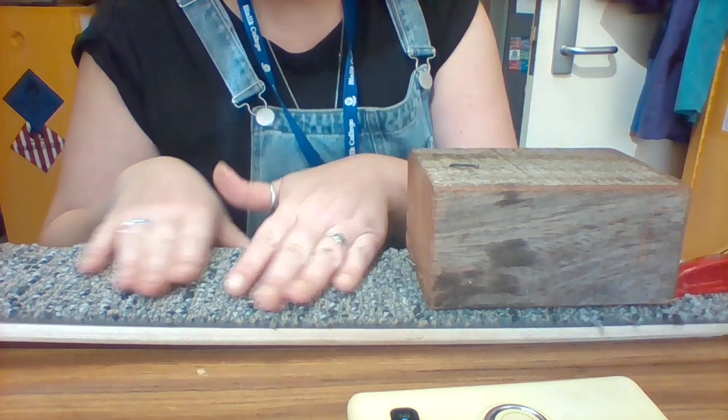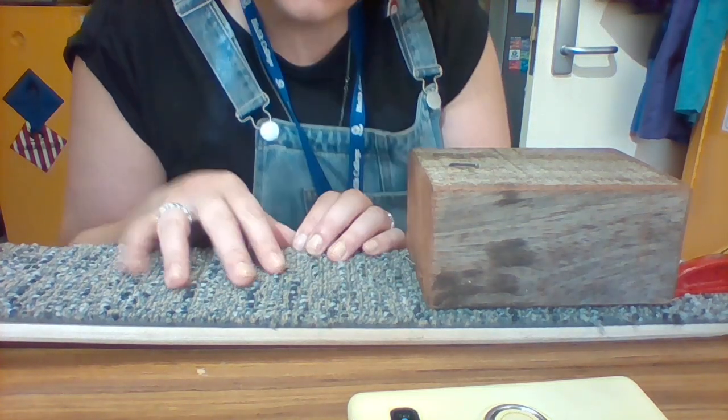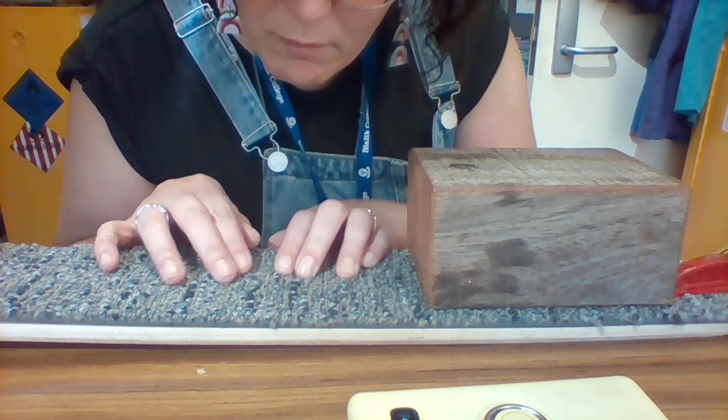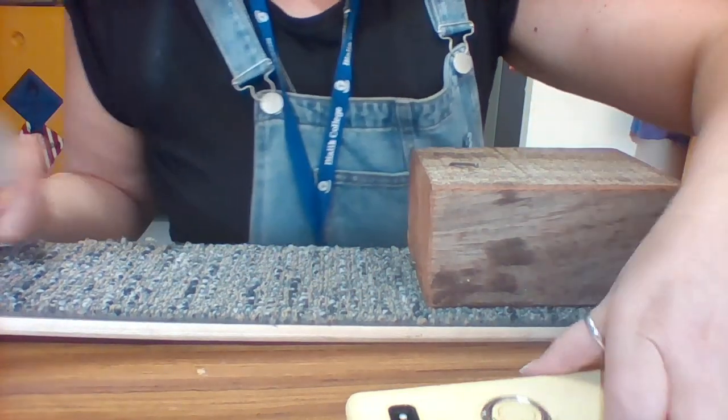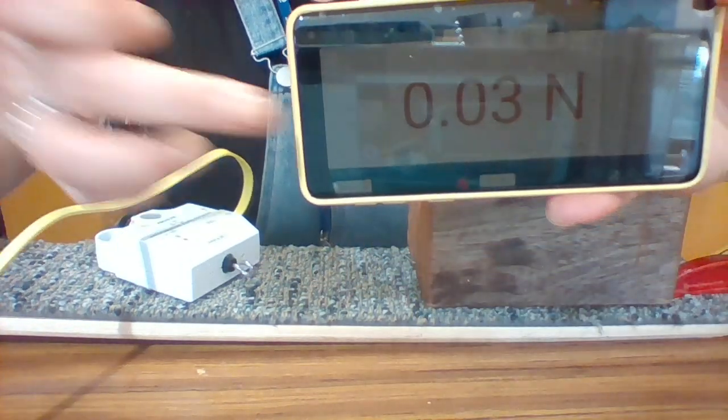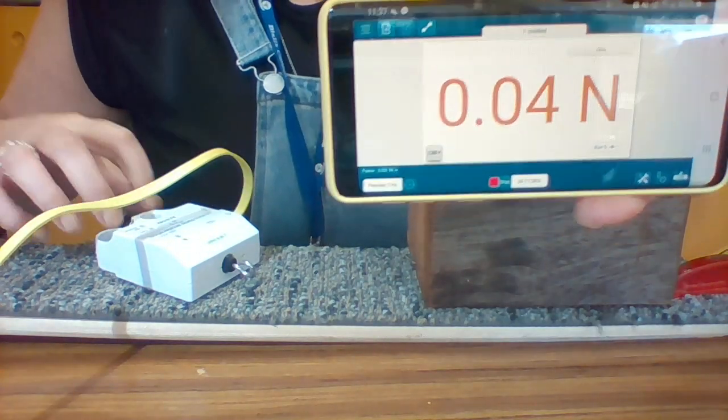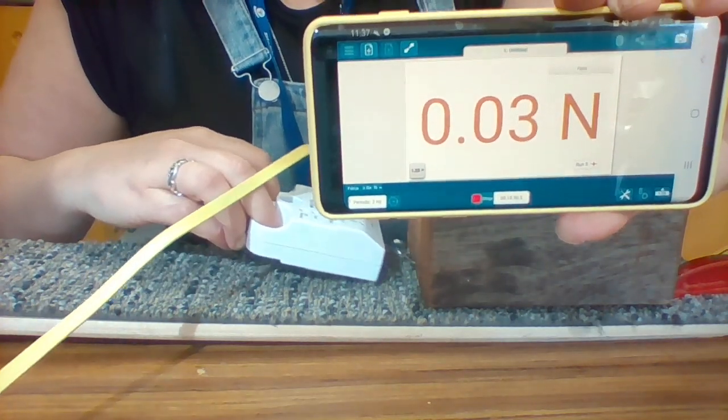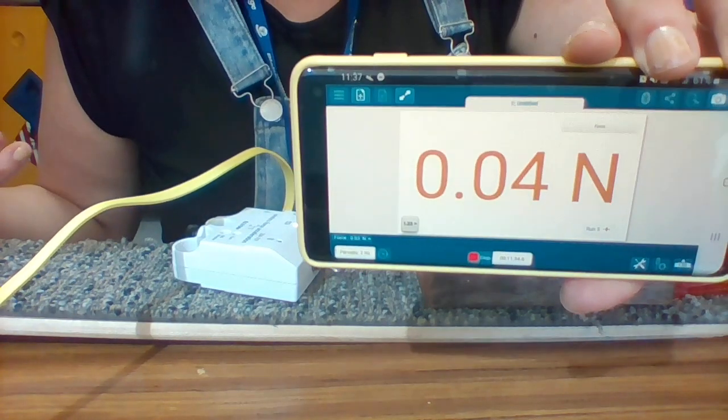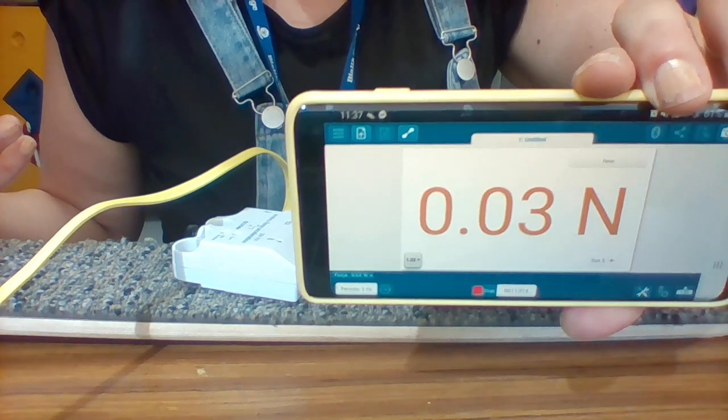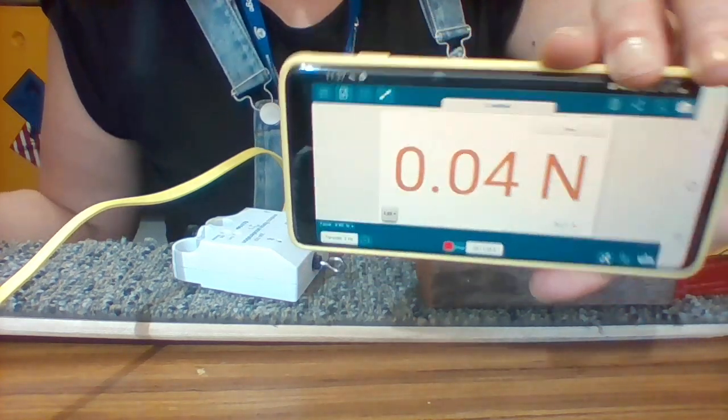And we're back with a new surface. So this is carpet but it's like the rough bubbly carpet. Alright, let's see how much force it takes to drag this one along. So you're looking at the friction. The higher the force it takes, the higher the newtons, the higher the friction basically.